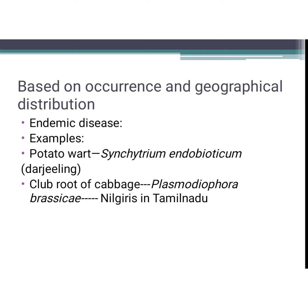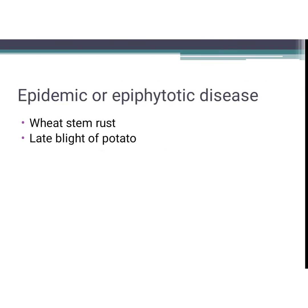Based on occurrence and geographical distribution — a very important classification from which many objective questions are asked. First is endemic disease: a disease that is prevalent or confined to a particular country or district. Example: club root of cabbage, confined to Nilgiris in Tamil Nadu, caused by Plasmodiophora brassicae, and wart disease of potato caused by Synchytrium endobioticum, confined to Darjeeling in West Bengal. Next is epidemic or epiphytotic disease — defined as a sudden outbreak of disease.